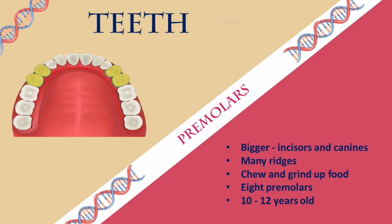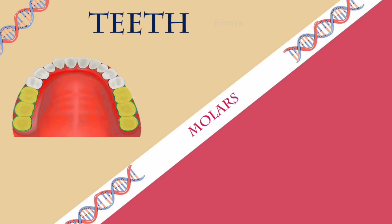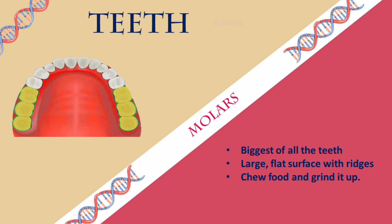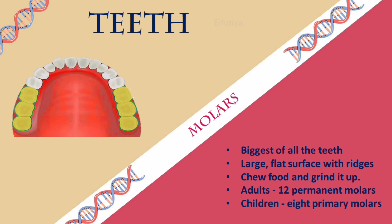Molars are the biggest of all the teeth. They have a large flat surface with ridges that allow them to chew food and grind it up. Adults have 12 permanent molars — 6 on the bottom and 6 on the top jaw — and children have 8 primary molars.